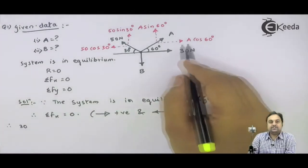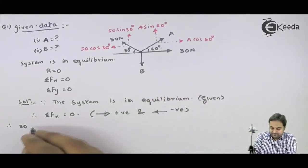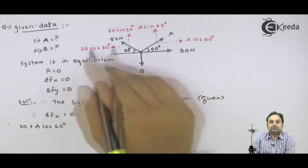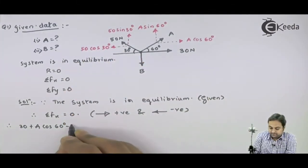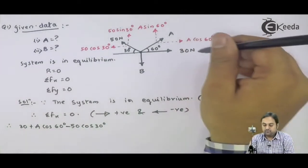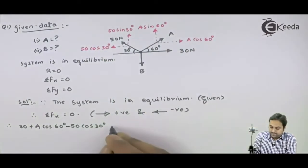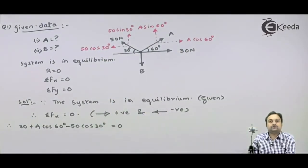A cos 60 is also towards right so positive. 50 cos 30 is towards left so negative. So we have 3 horizontal forces. 50 cos 30. They are equal to 0 because the system is in equilibrium.